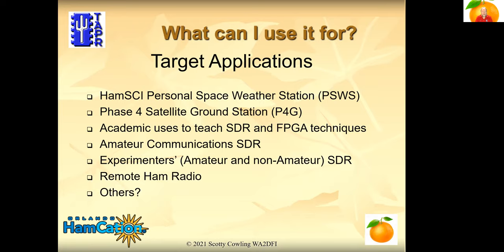So what can I use it for? The first application is going to be the HAMSci Personal Space Weather Station, but there are other uses planned: a Phase 4 satellite ground station, academic uses to teach SDR and FPGA techniques at universities, amateur communications SDR where you pick the features and performance level you want to pay for, and a remote ham radio remote control capability, which is a really up-and-coming feature of most SDRs these days. There are a few more interesting things you can do with this radio that I'll get to toward the end.